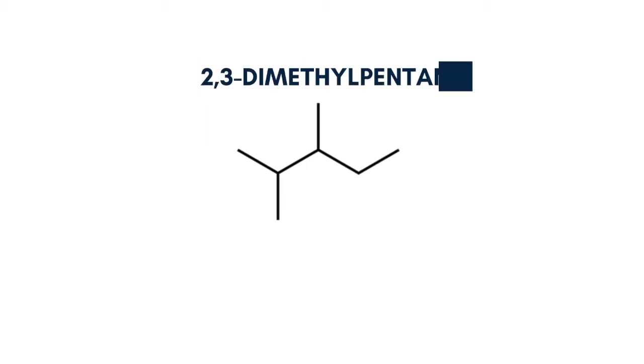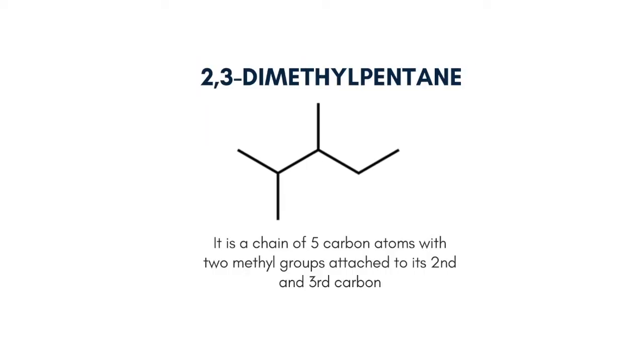The sixth one is 2,3-dimethylpentane, which is a chain of 5 carbon atoms with 2 methyl groups attached to its second and third carbon.